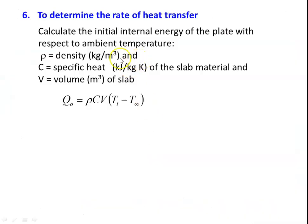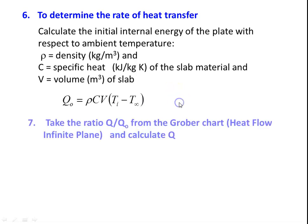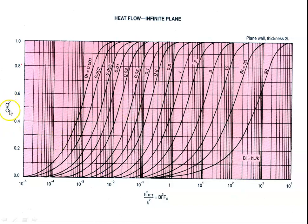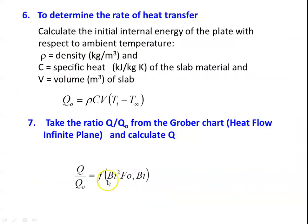To determine the heat transfer, calculate the initial internal energy of the plate with respect to ambient temperature: Q_O = ρCV(T_i − T∞), where ρ is the density, C is the specific heat, and V is the volume. This equation is also available in your heat and mass transfer data book. From the Grober chart, take the Q/Q_O ratio to calculate the heat flow. The y-axis is Q/Q_O and the x-axis is Bi² × Fo. This chart is applicable for Biot number from 0.001 up to 50. Calculate Bi² × Fo and the Biot number, read Q/Q_O, and then Q = Q_O × (Q/Q_O).